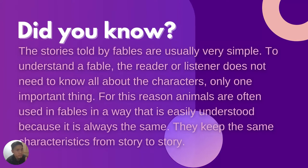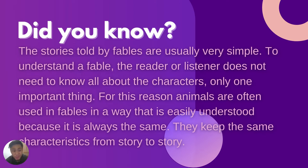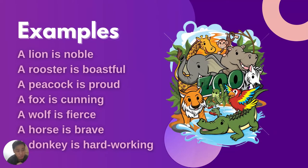Did you know? The stories told by fables are usually very simple. To understand a fable, the reader or listener does not need to know all about the characters — only one important thing. Animals are often used in fables in a way that is easily understood because they keep the same characteristics from story to story. For example: a lion is noble, a rooster is boastful, a peacock is proud, a fox is cunning, a wolf is fierce, a horse is brave, and a donkey is hard-working.